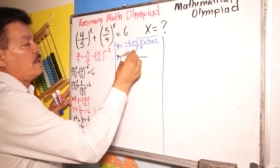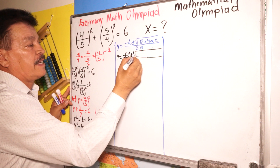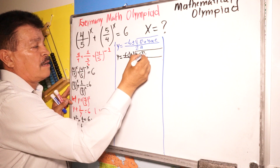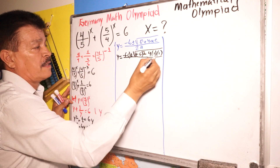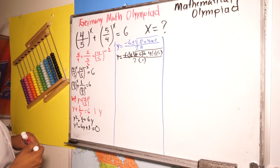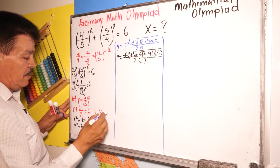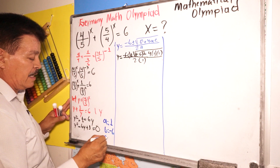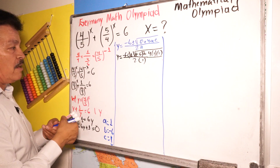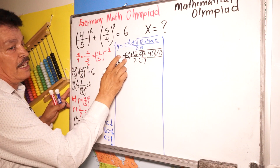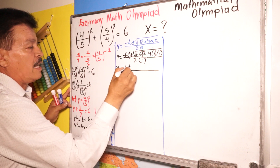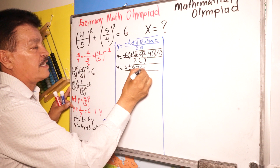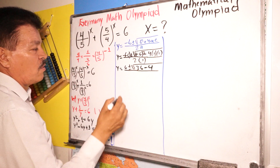Let's substitute into the square root of the formula. The numbers are: A equals one, B equals negative six, C equals one. So we simplify: six squared is 36 minus four. So we have six plus or minus the square root of 32 divided by two.